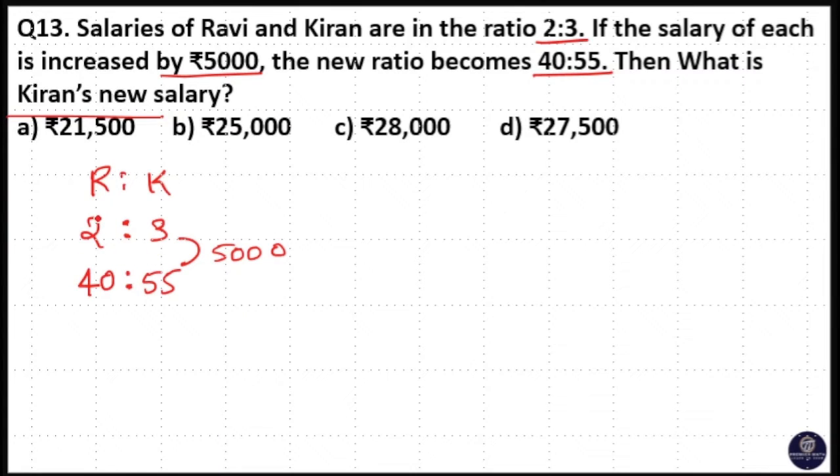So in order to make it constant, take the difference between 2 and 3 that is 1 unit. Then multiply it with 40 is to 55. Then take the difference between 40 and 55 that is 15 unit. Then multiply it with 2 and 3.